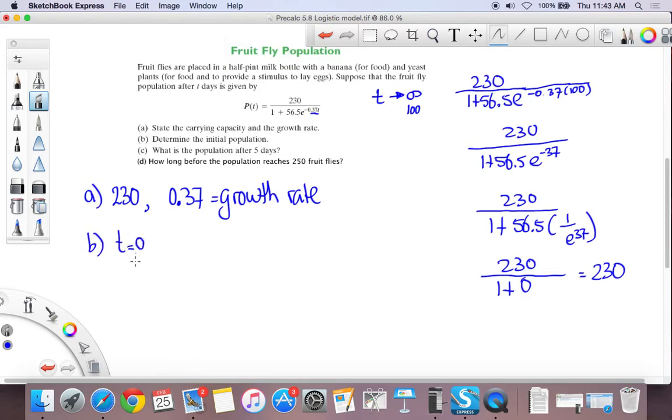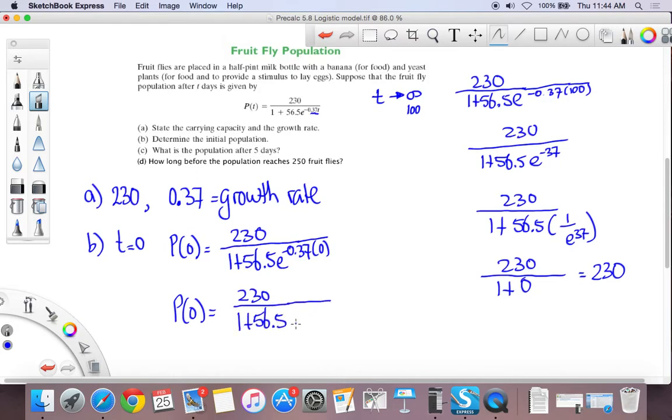Determine the initial population. The initial population is when time is equal to 0. So that is actually just sort of an evaluation. So we get 230. This will be a calculator problem. So what's negative 0.37 times 0? So that's just 0, right? So we get P(0) is equal to 230. And I've got an E here, divided by 1 plus 56.5. And you get E to the power of 0. Well, E to the power of 0 is just 1. So we get 230 divided by 57.5.